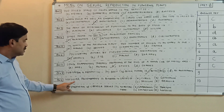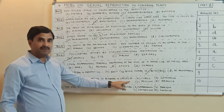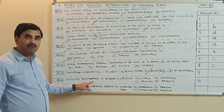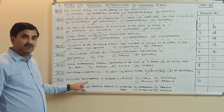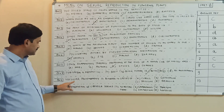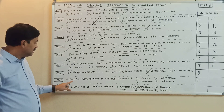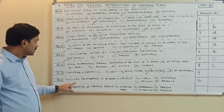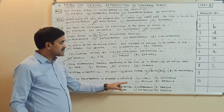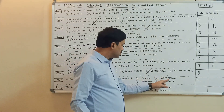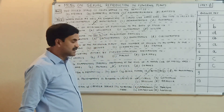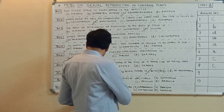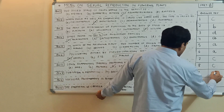Question number nine: nucellar polyembryony is reported in the species of? Polyembryony means more than one embryo. Nucellar polyembryony means the extra embryos are formed by the nucellar tissue. Nucellar polyembryony is reported in the species of citrus, gossypium, triticum, or brassica? It is reported in citrus. Question number nine, answer is A.